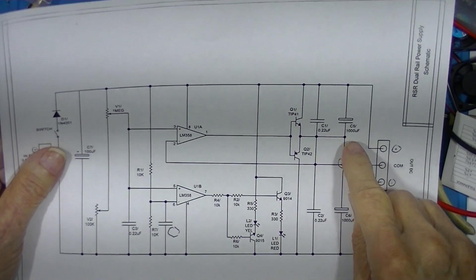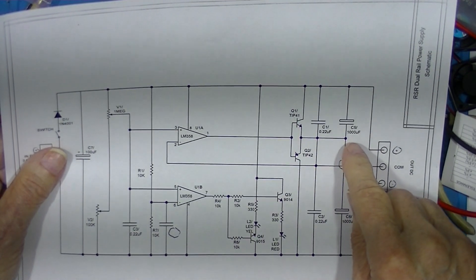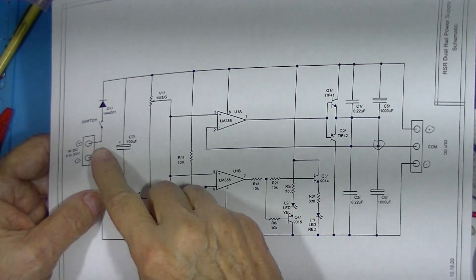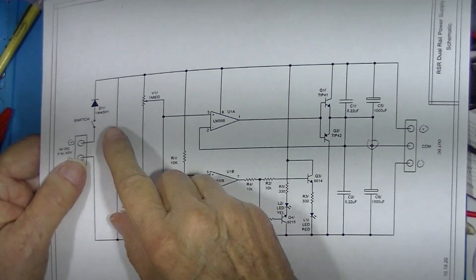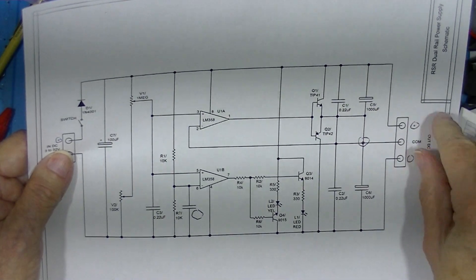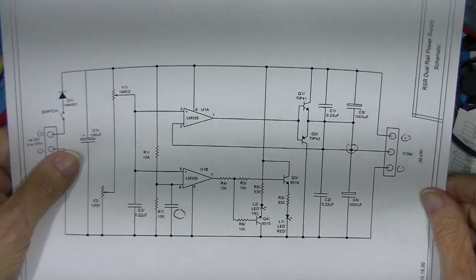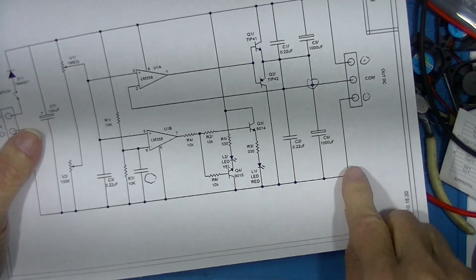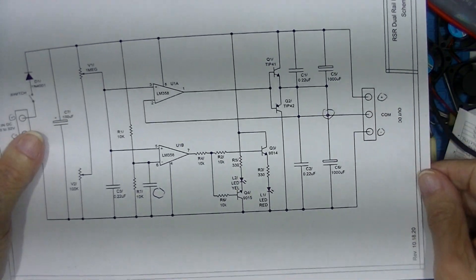Now current limiting has got to be supplied by the input supply. Obviously this can't do any current limiting. I was supposed to have a dot there, and I've got some other little things.